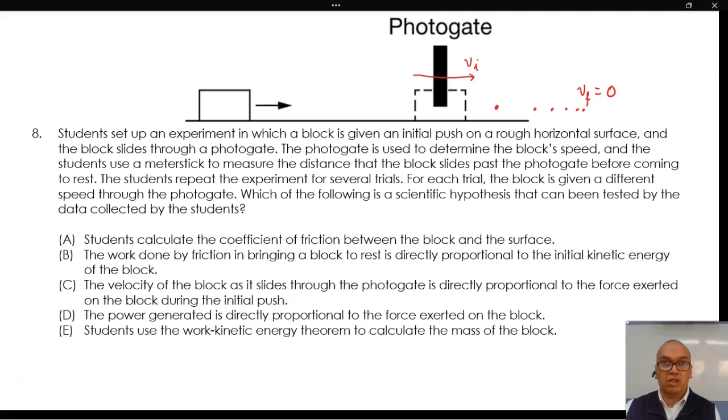The students repeat the experiment for several trials. For each trial, the block is given a different speed through the photogate. Which of the following is a scientific hypothesis that can be tested by the data collected by the students?